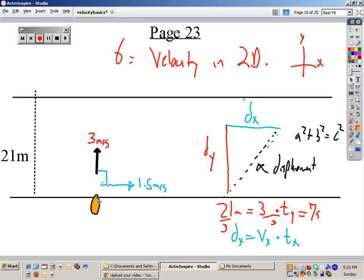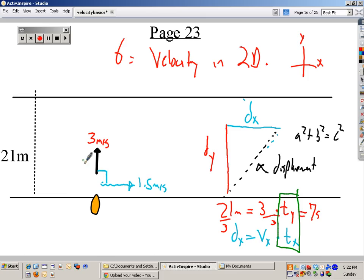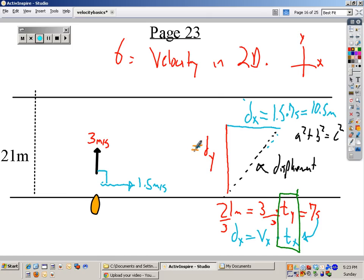Now here's the hitch. However long it's crossing the water is the exact same amount of time that it's drifting. In other words, these two are equal. However long it took to cross is however long it took to drift. So now I can write out my formula for the distance in the y equals, what's my velocity in the y? 1.5 times, what's my time in the y? 7 seconds. So I've got this distance equals 10.5 meters, and I've got this distance equals 21 meters, and now we can solve for the displacement.